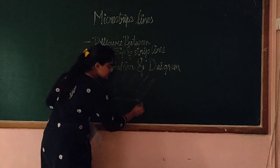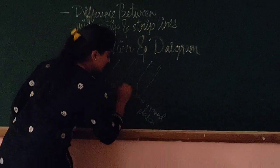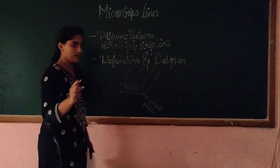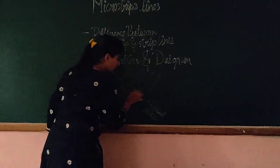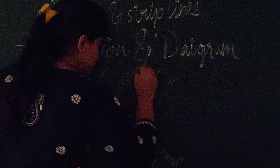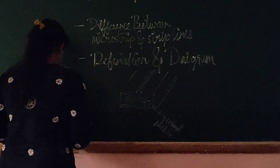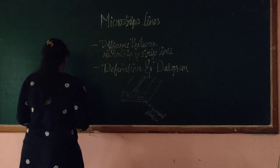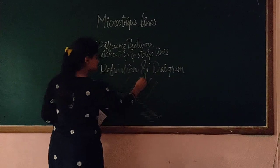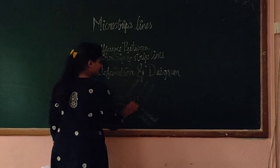Basically this is the ground plate, and this is the dielectric material — it is a parallel plate conductor material. This will be the dielectric material, and this will be the conductor. So it basically consists of a conducting material which separates a ground plate by a dielectric material.